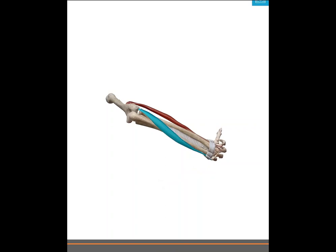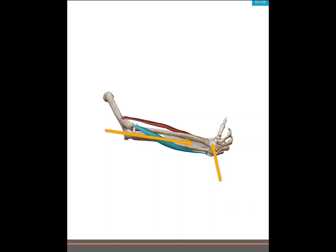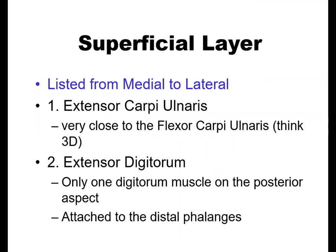Here you can see — I'll stop it here — it's all the posterior muscles, posterior to that wrist joint, that are wrist extensors.